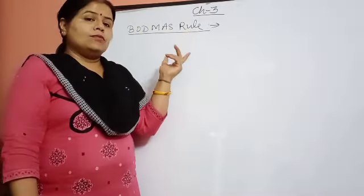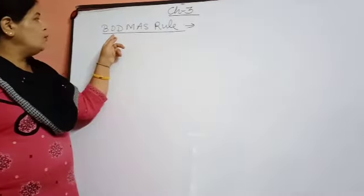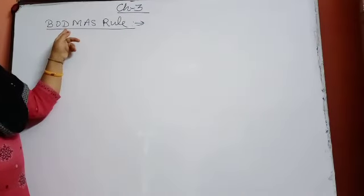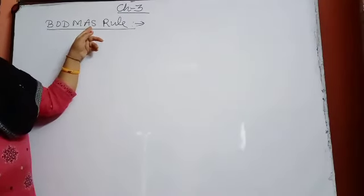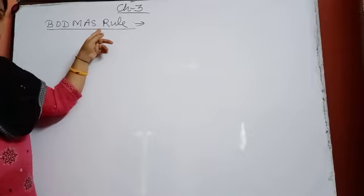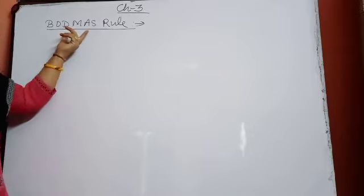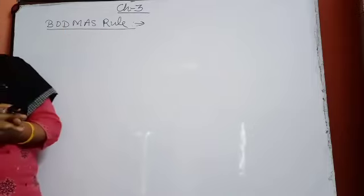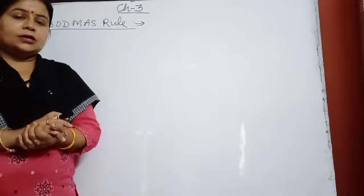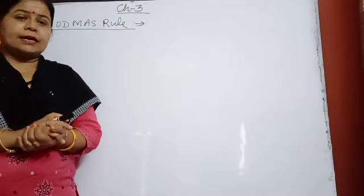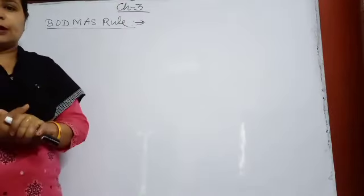What is the BODMAS rule? B for bracket, O for 'of', D for divide, M for multiply, A for addition, and lastly S for subtraction. Whenever we have the four fundamental operations of arithmetic, we will use them in this order.